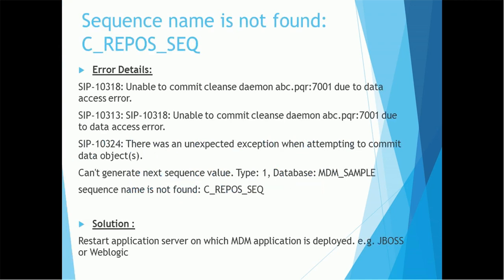The very first issue is related to the sequence name on the database side — whether it's Oracle, SQL Server, or DB2. This sequence is maintained in a repository table called C_REPOS_SEQUENCE. The issue is that the sequence name is not found. The actual error says: 'Unable to commit cleanse daemon abc.pqr:7001 due to data access error.' Here abc.pqr is the server name or load balancer name, and 7001 is the WebLogic port.